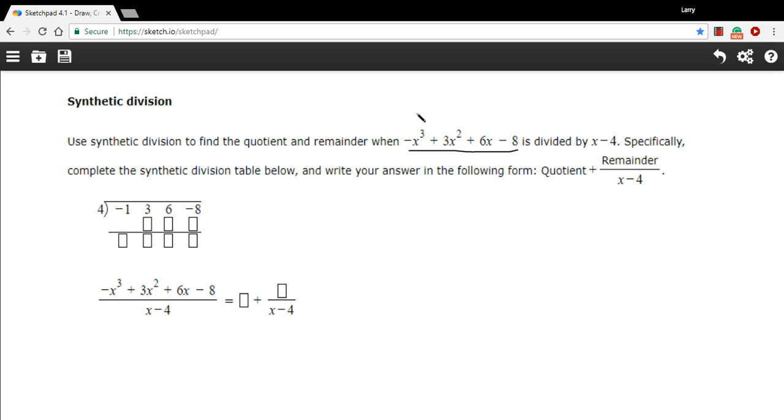We can just pull their coefficients. This would be negative 1, 3, 6, and negative 8. And you can see here, they've put these together in this little chart. They've put the division symbol up here.